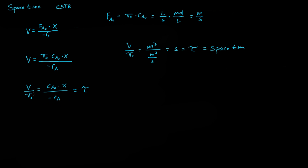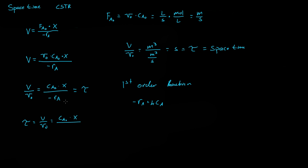If we continue on with a first-order reaction, we know the reaction rate is equal to K times the concentration of A. So the space-time equals V over V₀, which equals CA₀ times the conversion all divided by RA, or just K·CA. We also remember that the concentration of A equals the initial concentration of A times (1 minus X), which is the basic calculation for a batch system or a CSTR.